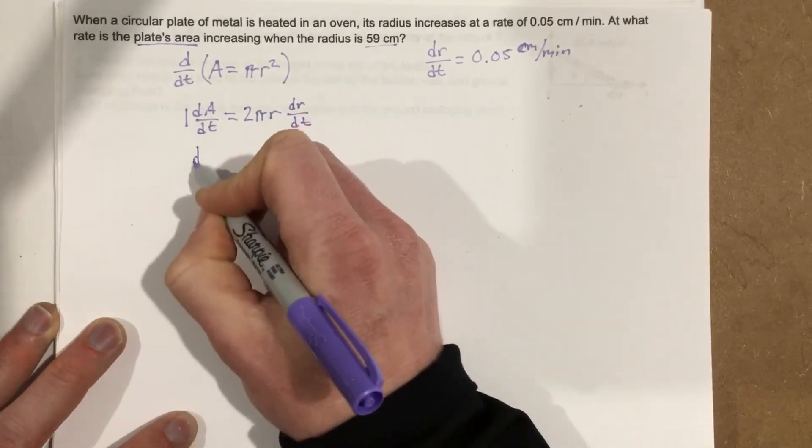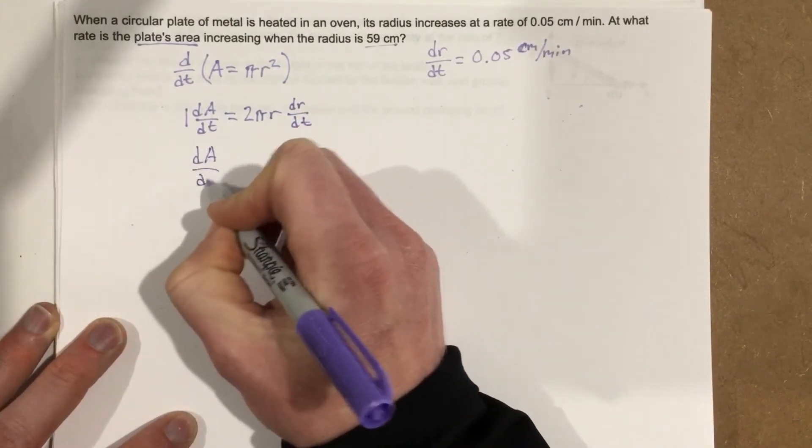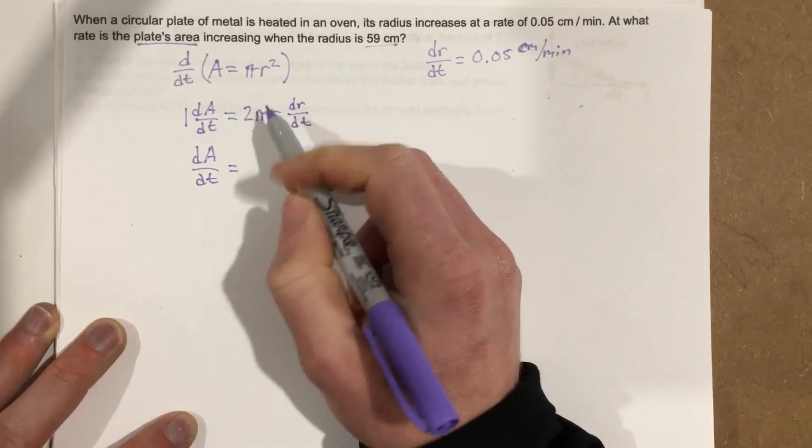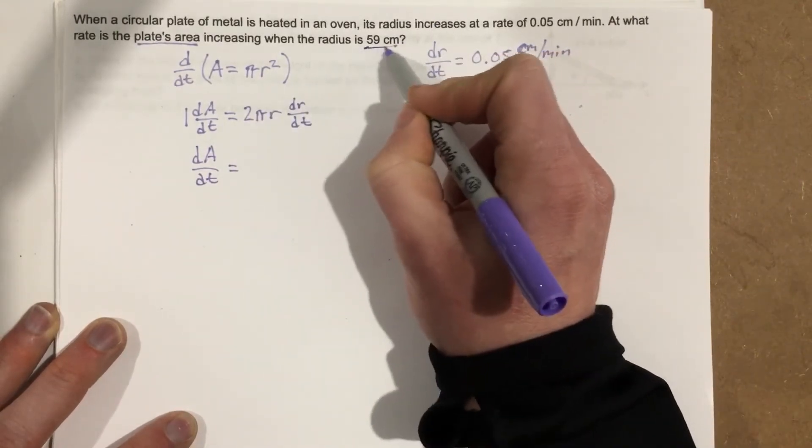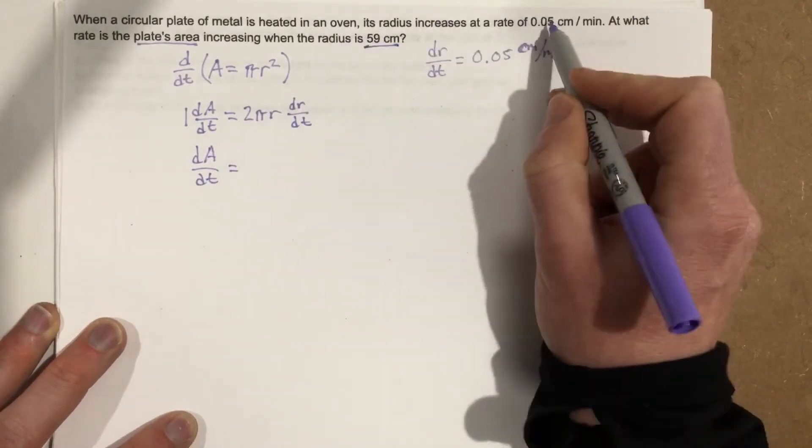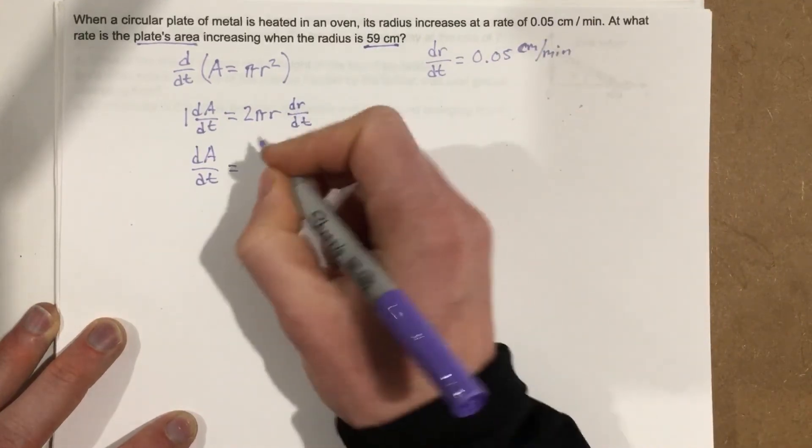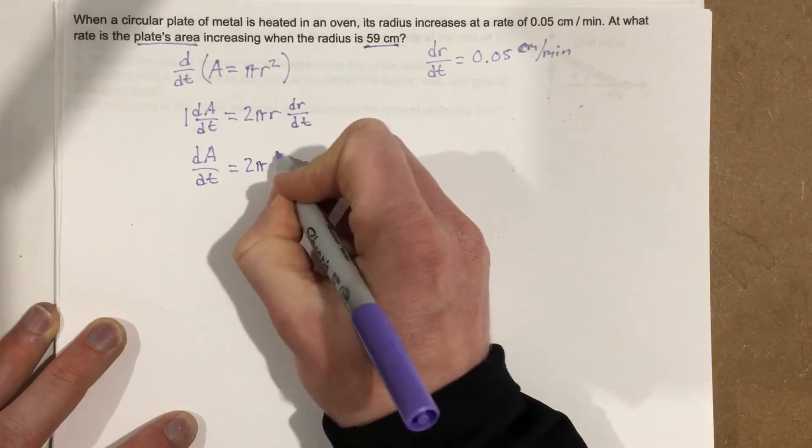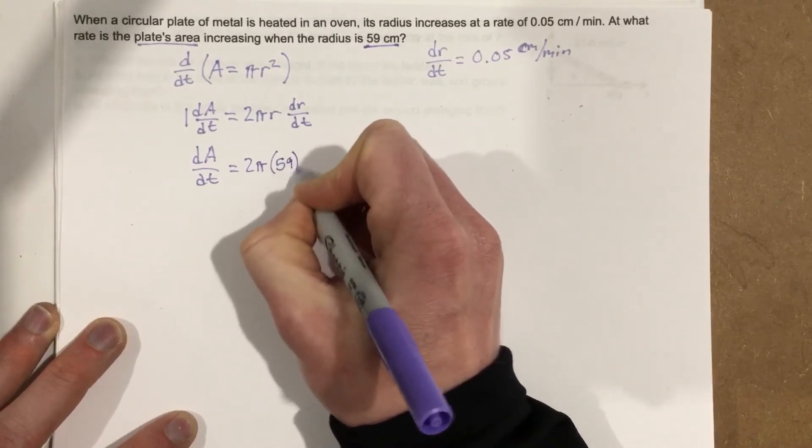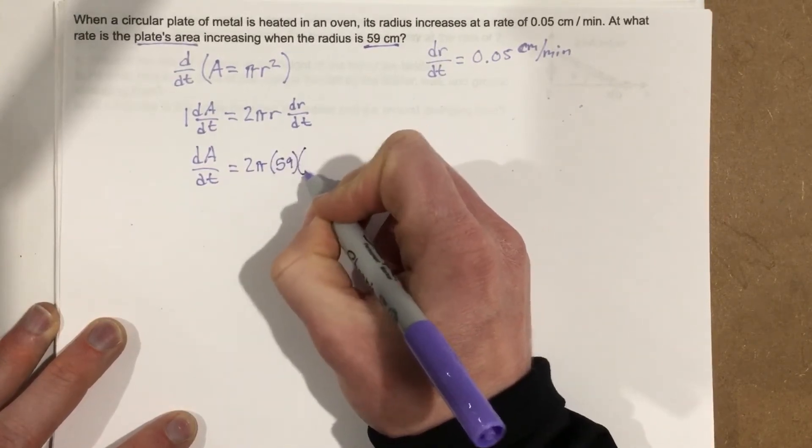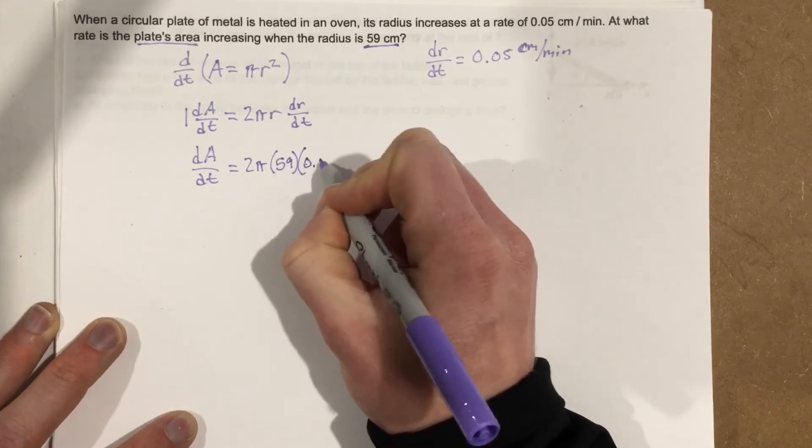Now we want to know the change in area with respect to time. So we're going to plug in what we know. They tell us 59 centimeters for the radius and they tell us 0.05 centimeters per minute for the rate. So this is going to be 2 pi times 59 times 0.05.